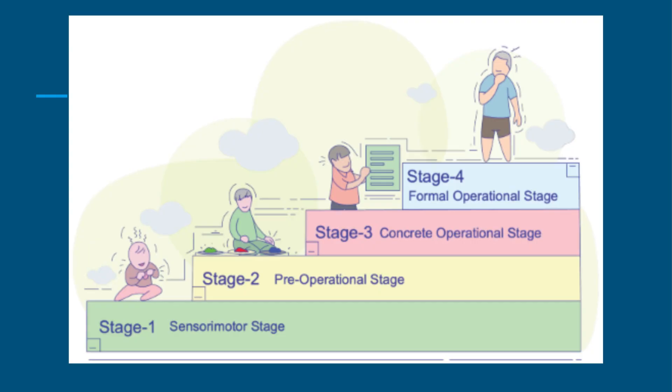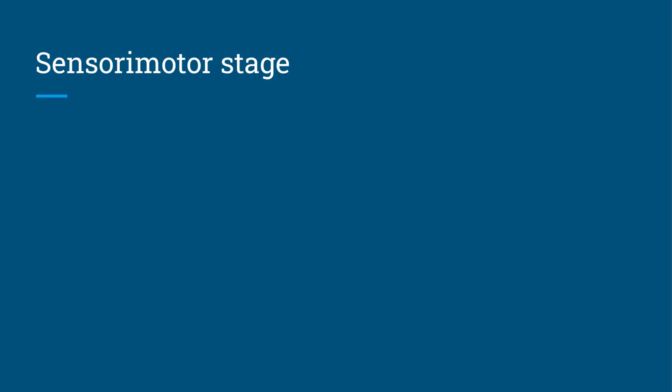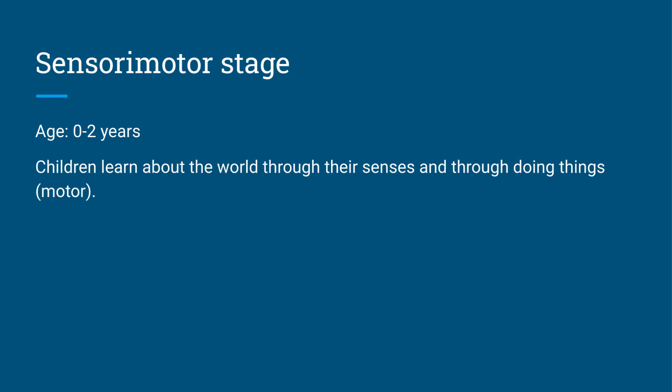So this is what we're going to look at: how children go through these four stages of learning and cognitive development. The first stage is the sensory motor stage. This occurs between the ages of zero and two. Children learn about the world through their senses and through doing things. They're touching, they're feeling things, using their senses and their motor skills. That's where the name of this stage comes from.